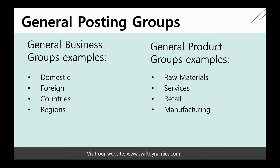The easiest way of remembering these groups is that the General Business Group is referring to who we do business with — for example, a customer or vendor — and the Product Posting Group is referring to what type of business we are doing, for example, some kind of product or service that we'll be purchasing, selling, or renting.